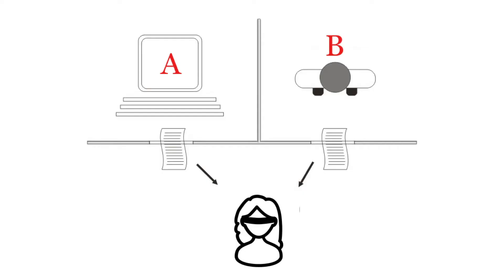The test is simple yet elegant. We keep a blind observer and let it communicate with a computer and a human. If it cannot distinguish between the two, the machine is deemed intelligent.